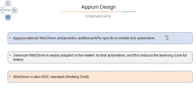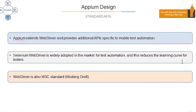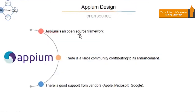When you use the Appium library, it gives you added classes and methods specific to mobile automation — such as swipe, because in mobile you do swiping, and tap, because in mobile you do tapping. There are many things specific to mobile apps provided by the Appium library. Since Selenium WebDriver is widely adopted, this reduces the learning curve for testers — if you know Selenium, you can easily switch to Appium. The driver is also W3C standard.